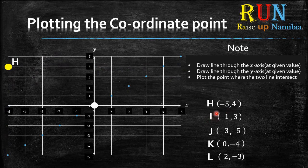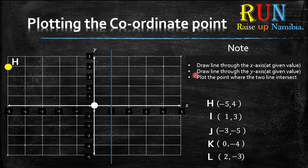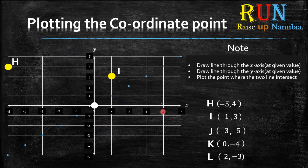For I, the x value is positive 1. Go on the x-axis, find positive 1, and draw your long line. The y value is positive 3, so go to the y-axis, find positive 3, and draw your line. Where the two lines intersect or cross — that's where you plot your I. Pause the video and do J, K, and L by yourself before I show you.